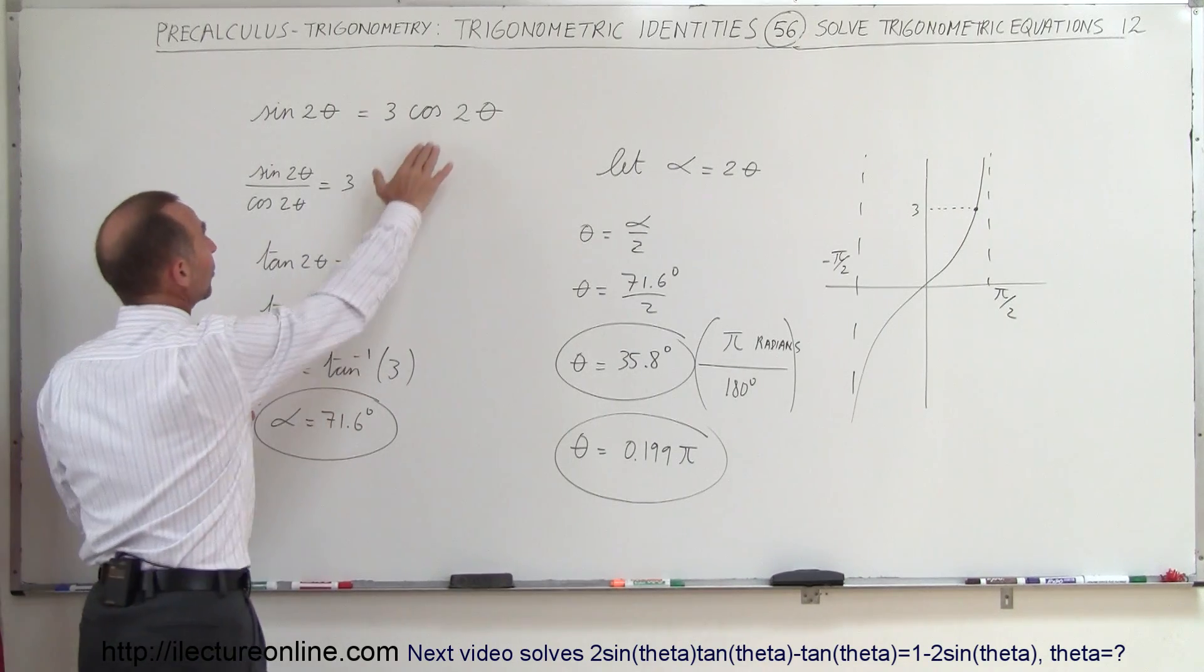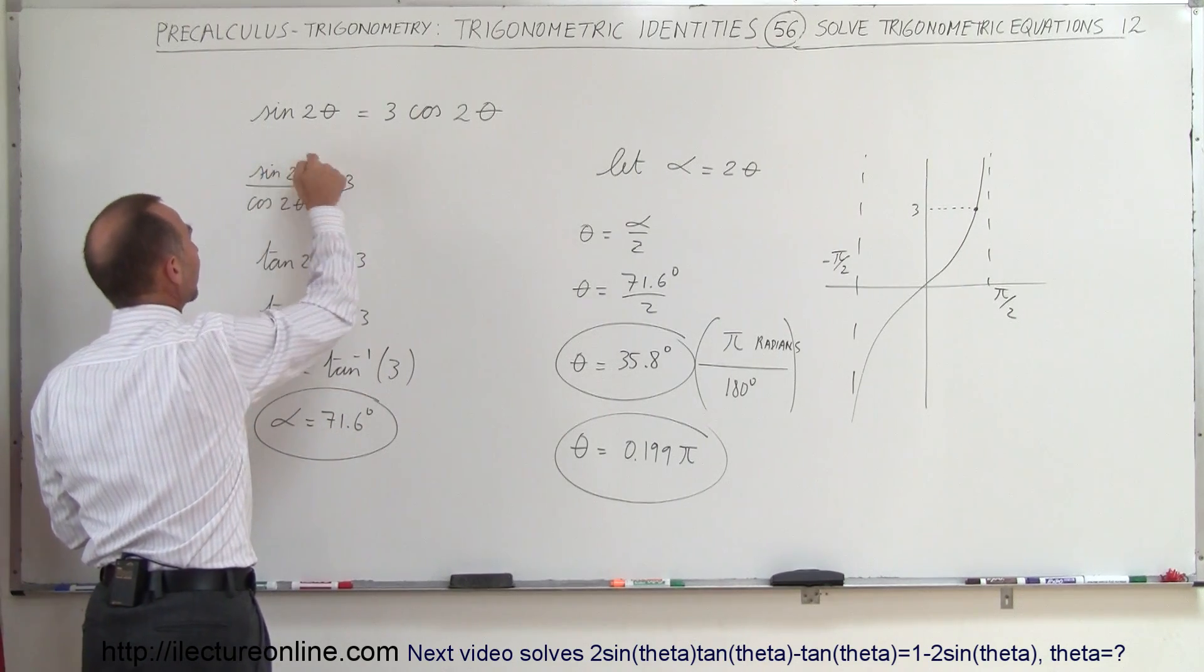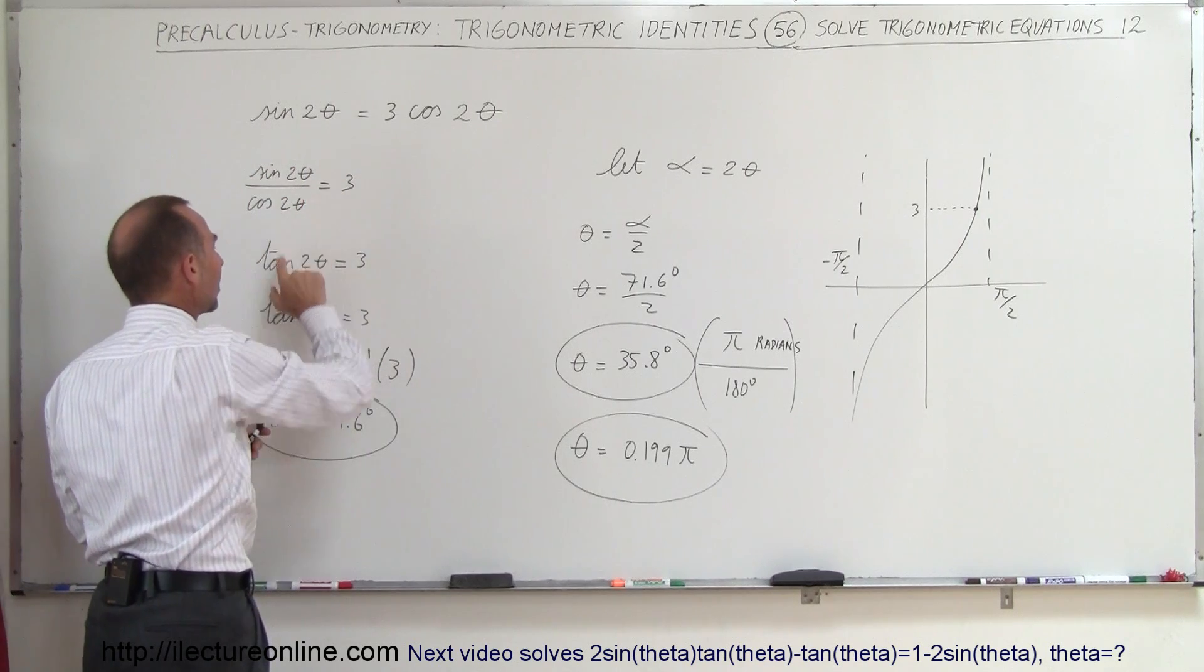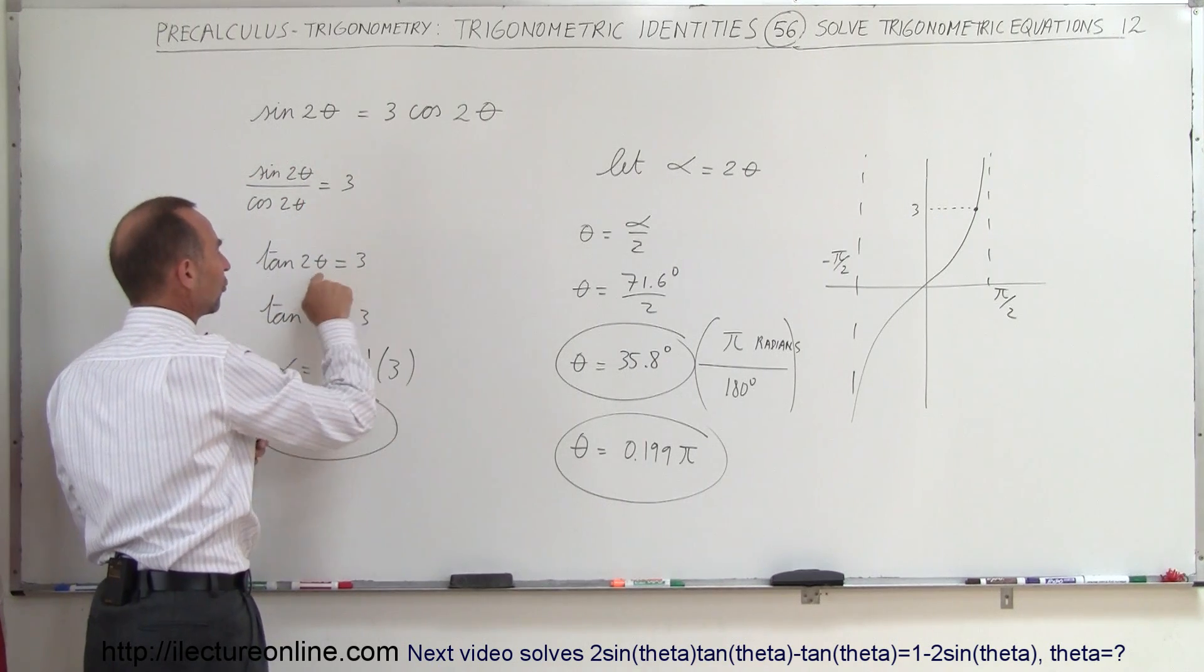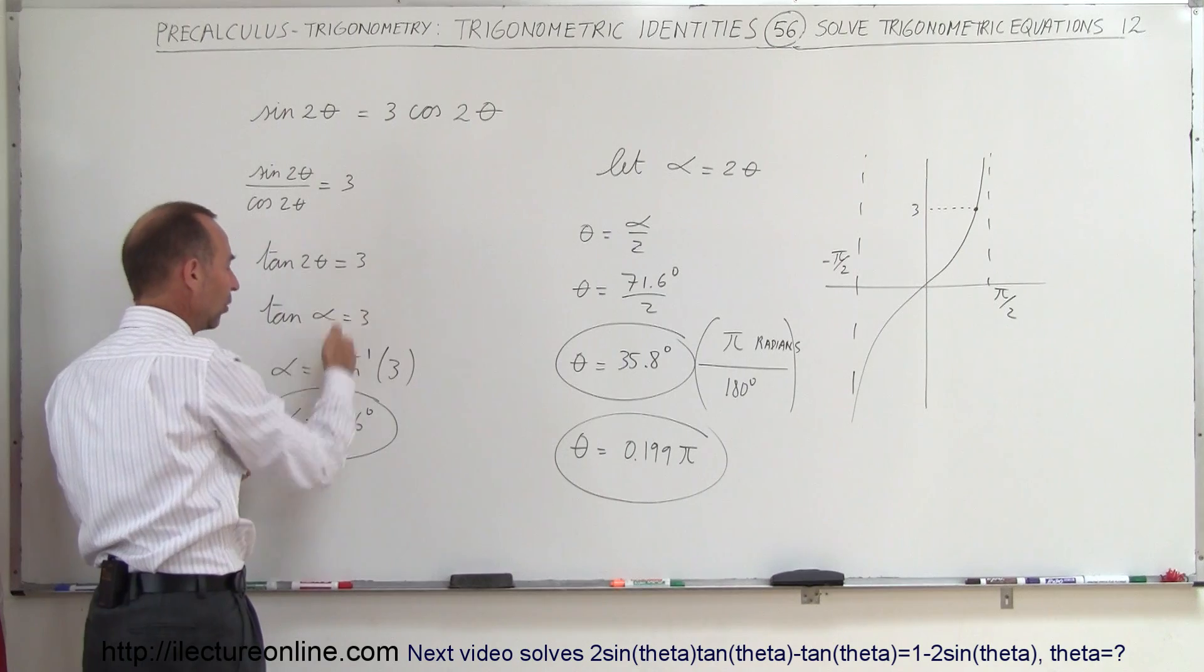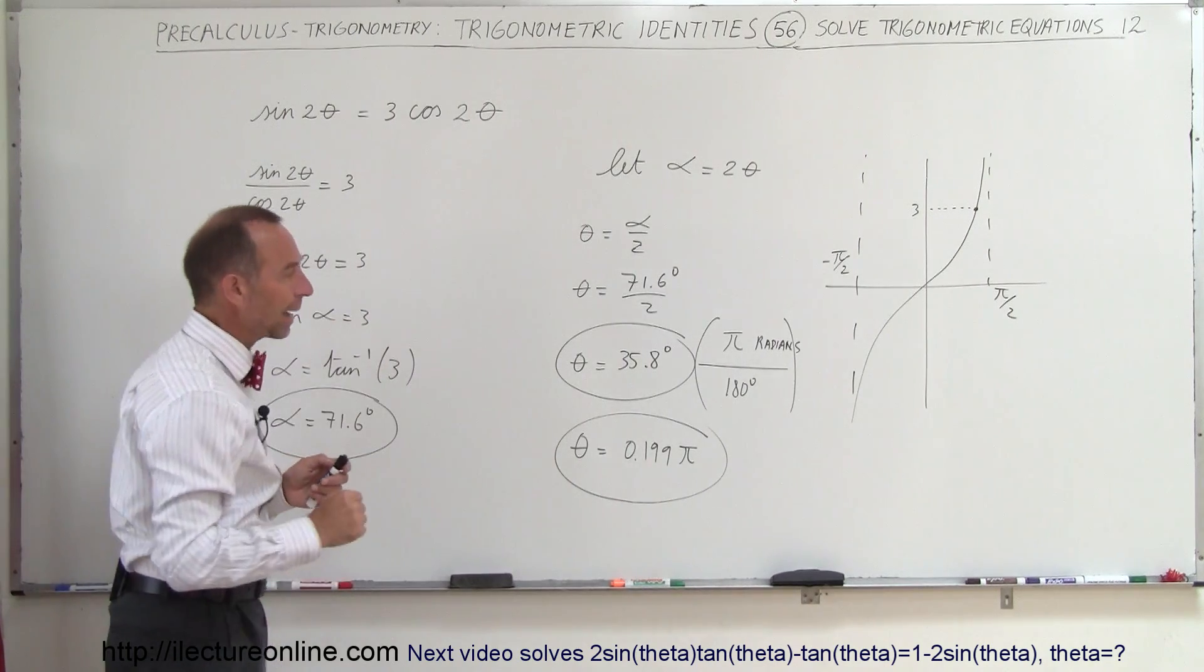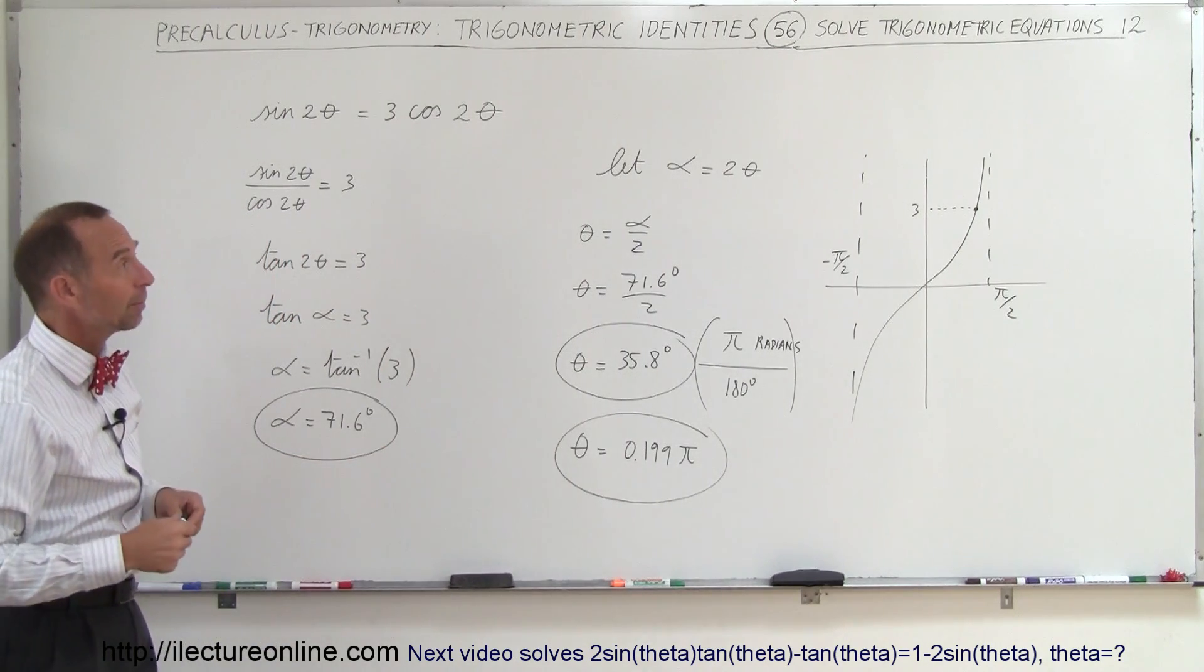Just realize here that if you can bring the cosine across, have sine divided by cosine, that's an easy identity—turns into tangent. Make the quick conversion from a double angle to a single angle, solve the problem, and then convert back. That's how easy this problem then becomes.